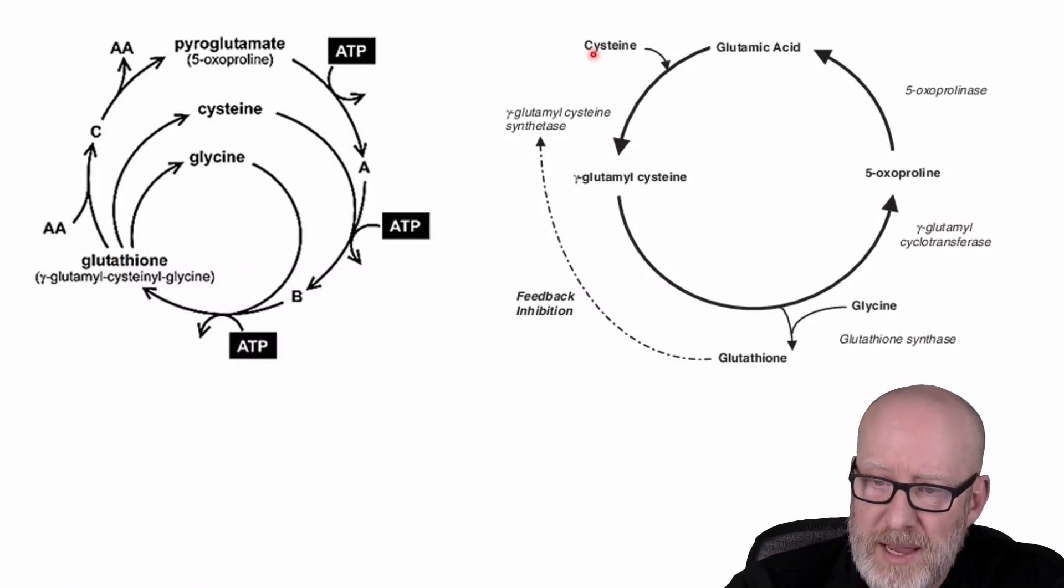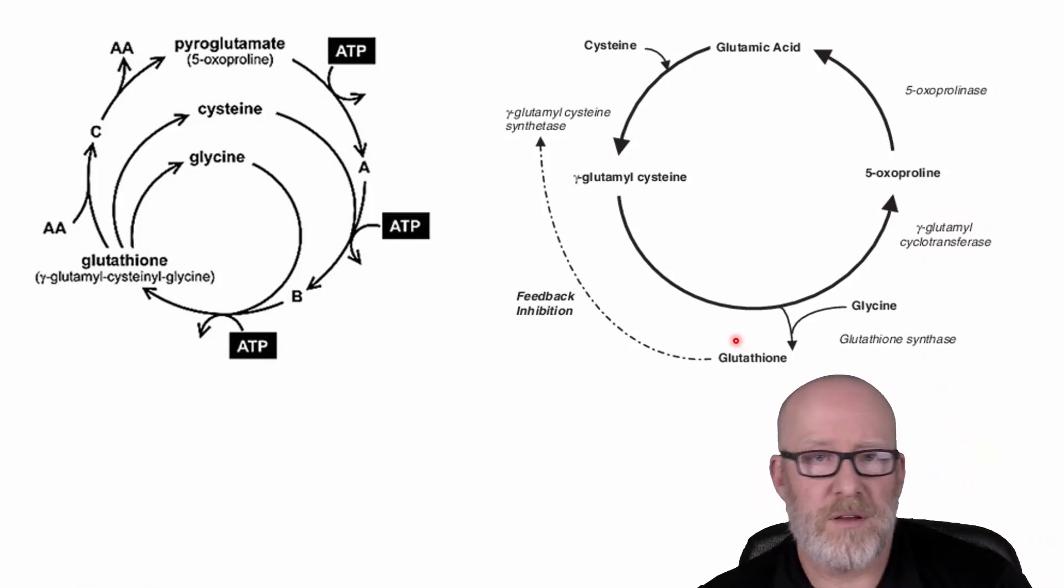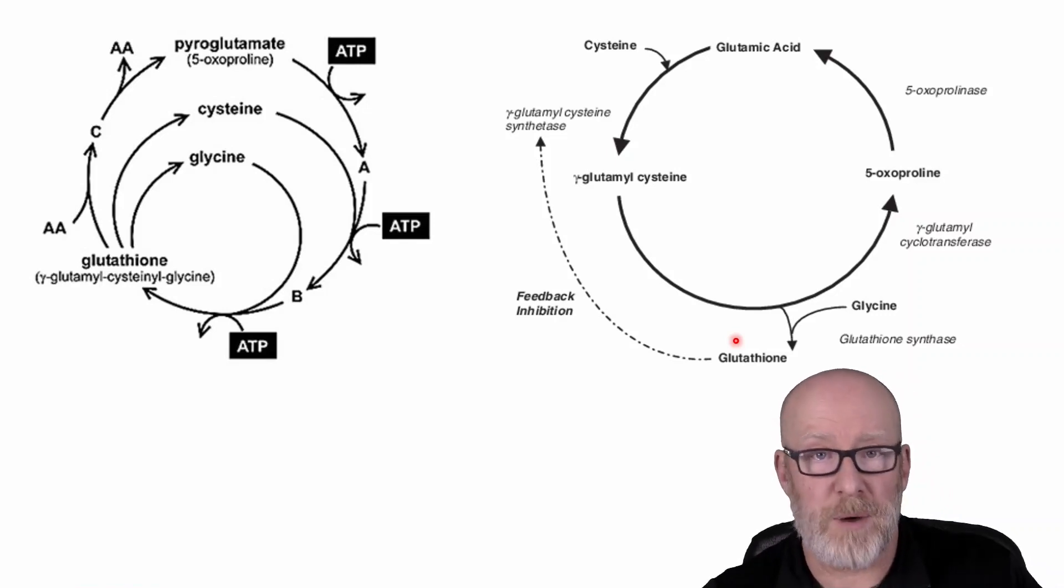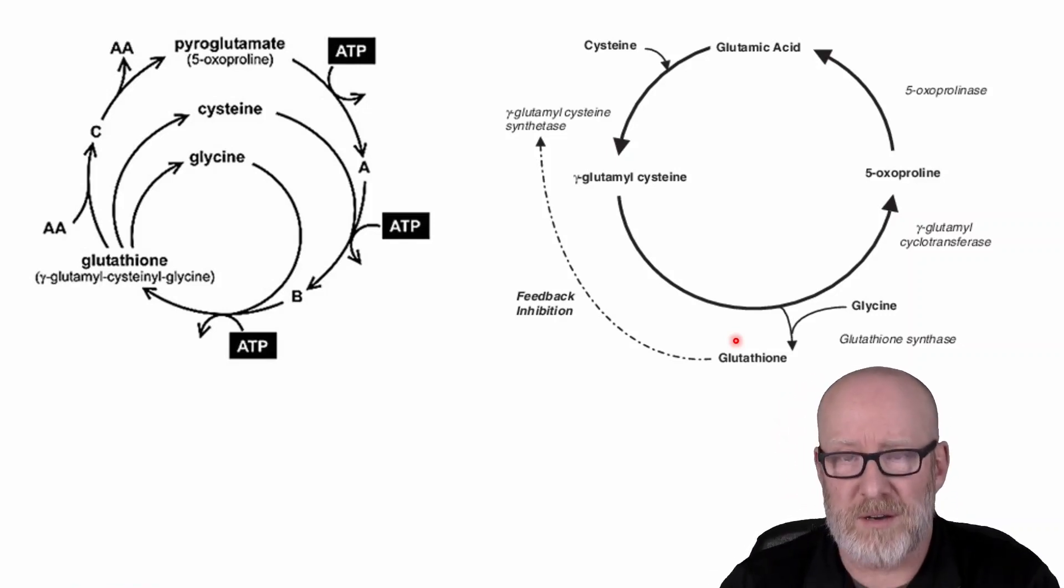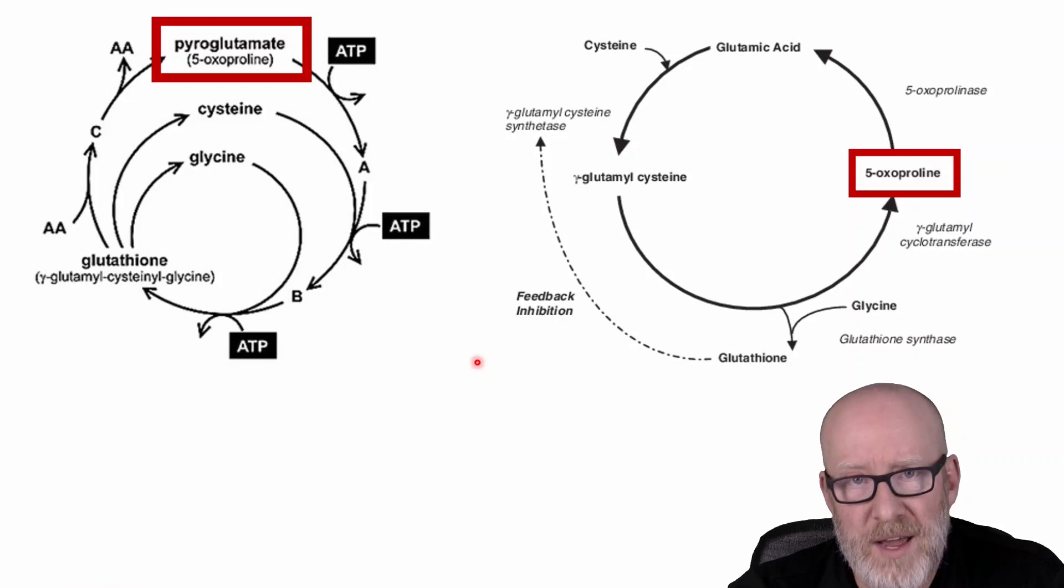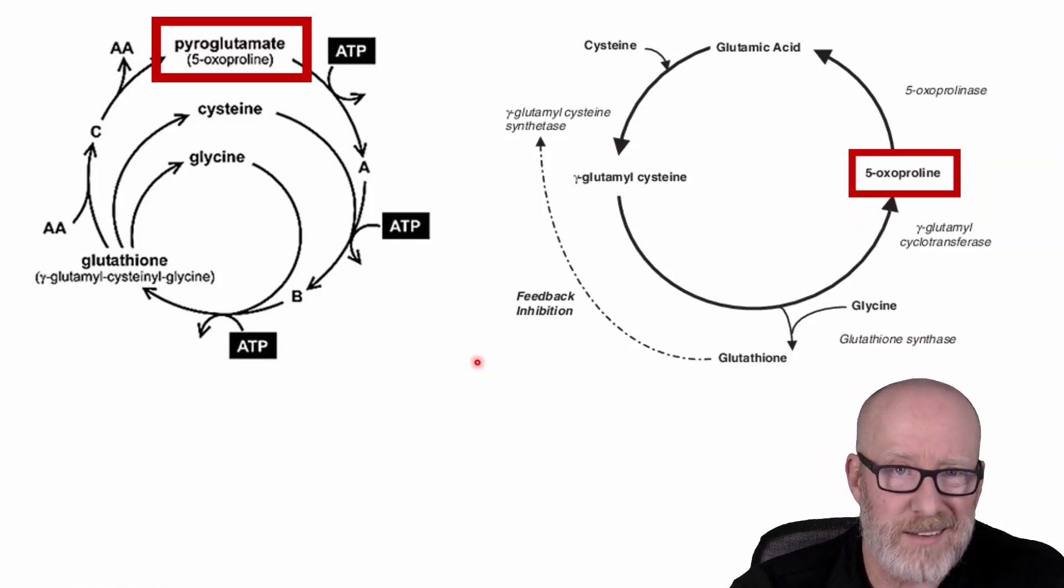And over here, you can see glutamic acid, cysteine is added here, glycine is added at the end, and then you get glutathione. Now, why is 5-oxyproline or pyroglutamic acid or pyroglutamate, a marker of supposedly glutathione deficiency? But you can see it here. So here's basically the way that this works. If there's some issue with the synthesis of glutathione, then this is going to tend to build up.